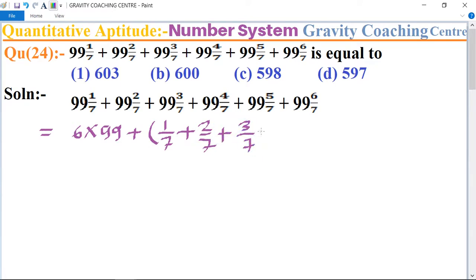Plus 4 upon 7 plus 5 upon 7 plus 6 upon 7. And now take the LCM, so its LCM is 7. And this one after multiplying 594 plus.